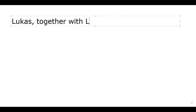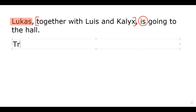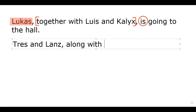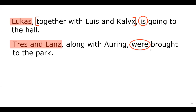For example, in the sentence 'Lucas, together with Luis and Calyx, is going to the hall,' your main subject is Lucas. The phrase 'together with Luis and Calyx' is the intervening phrase and does not affect the verb. Another example: 'Ontress and Lands, along with Aring, were brought to the park.' Here the main subject refers to two different persons, so it is plural and requires a plural verb.